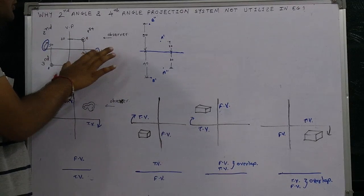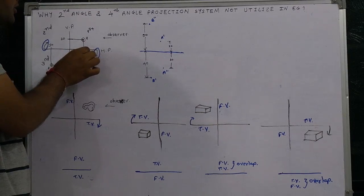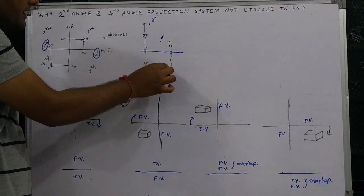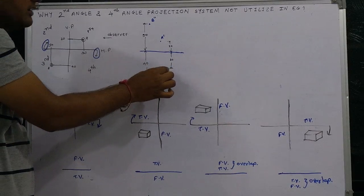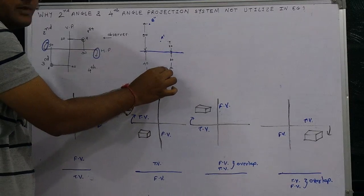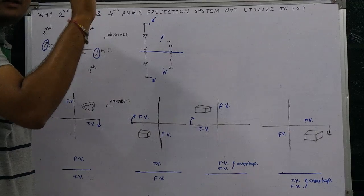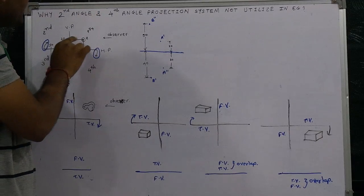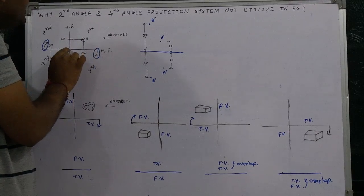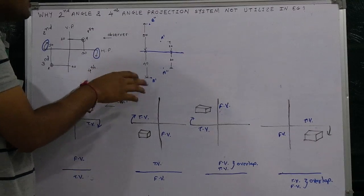The horizontal plane must be rotated in the downward direction. So whatever will be the projection of the point on the horizontal plane — that must be rotated downward. The 30 mm distance on the horizontal plane will indicate A double-dash (A''), meaning point A's projection on the horizontal plane. The vertical plane projection is defined by single-dash (A'), so point A at 20 mm above the vertical plane means A' will be at 20 mm.